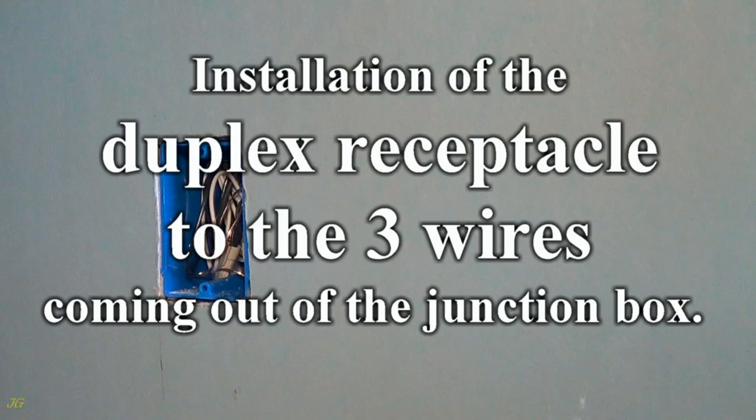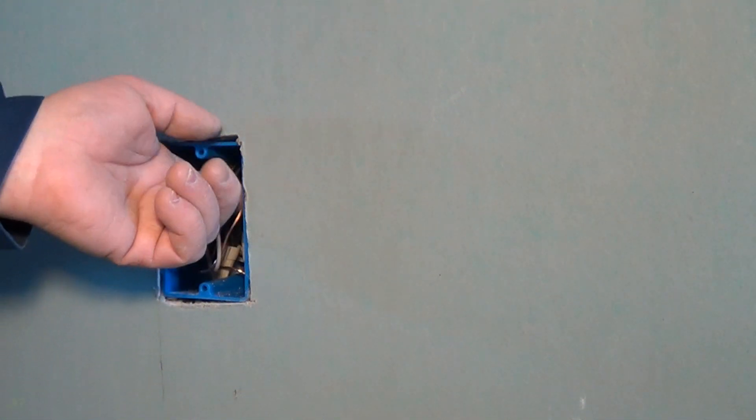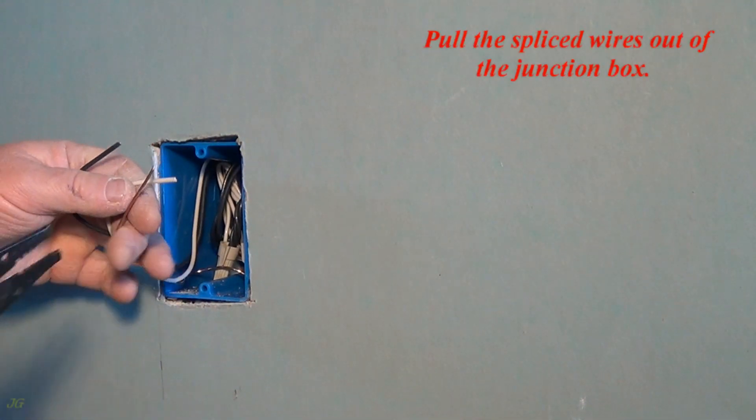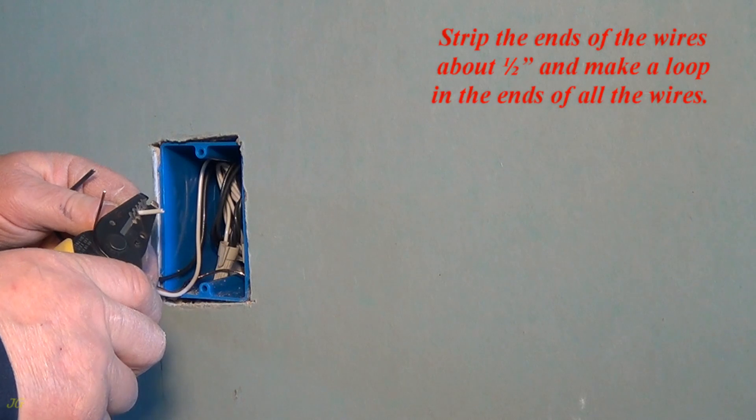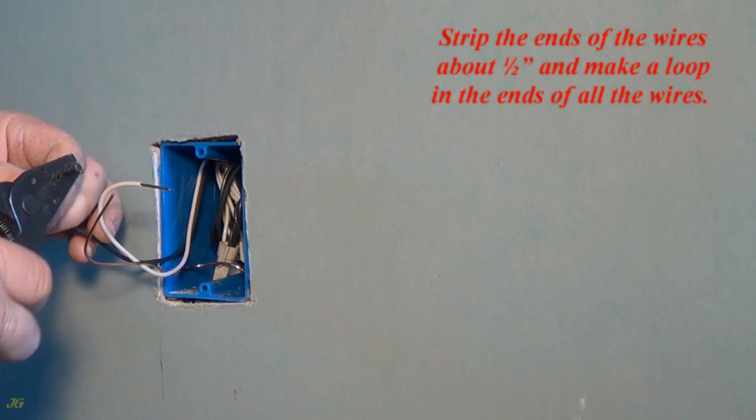Installation of the duplex receptacle to the three wires coming out of the junction box. Pull the spliced wires out of the junction box. Strip the ends of the wires about one half inch and make a loop in the ends of all the wires.